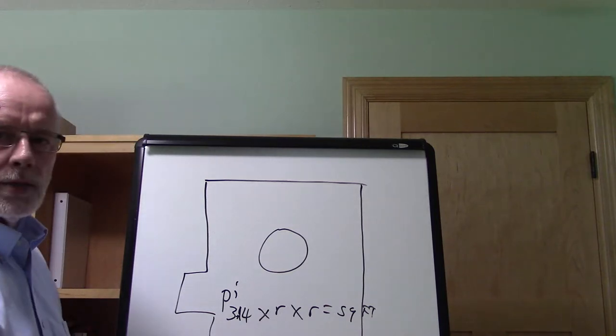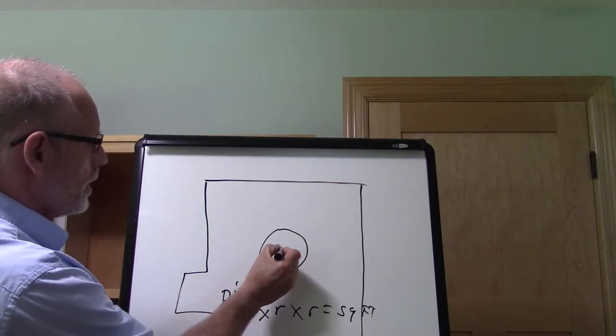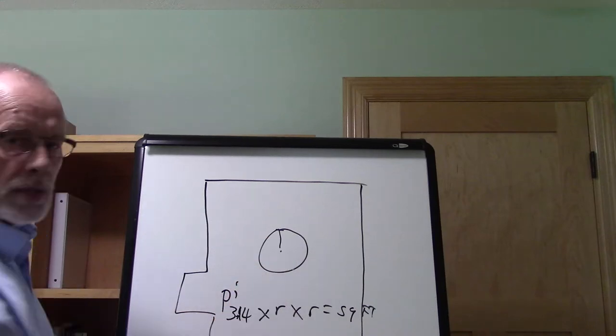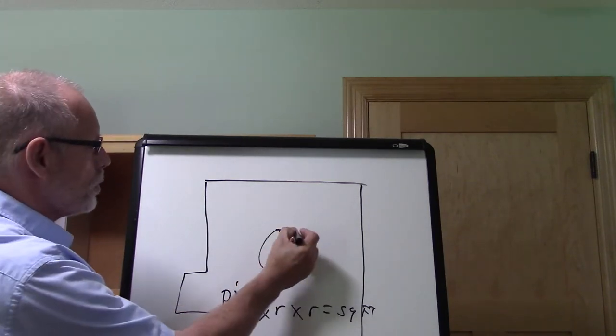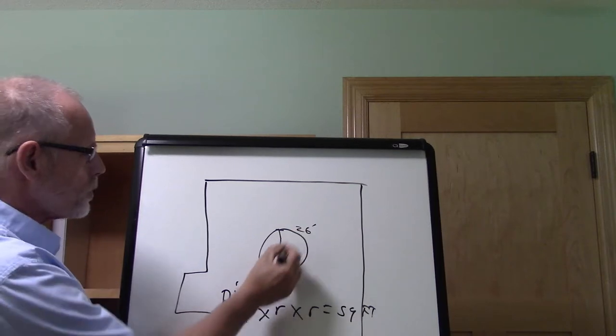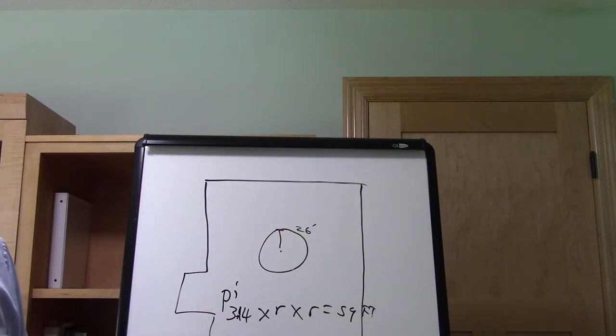In order to do this, we have to know our radius. The radius is the center point of the circle to the edge. In this example, their measurement was 26 feet. So we know our radius, now we're good.